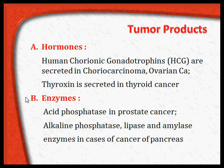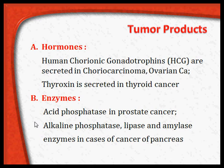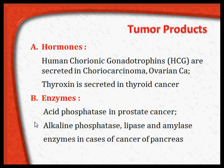Sometimes tumor products need not be hormones — they can be enzymes. For example, acid phosphatase in case of prostatic cancer, and alkaline phosphatase, lipase, amylase, and other enzymes in case of cancer of the pancreas. So tumor markers can be either antigens or tumor products like hormones and enzymes.